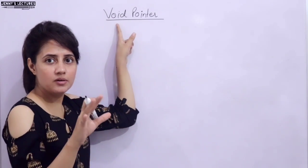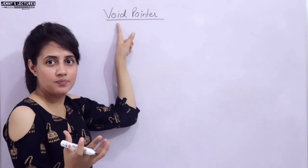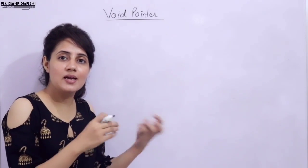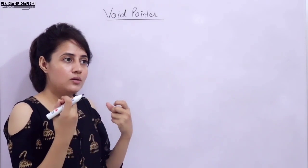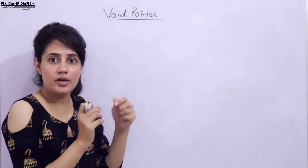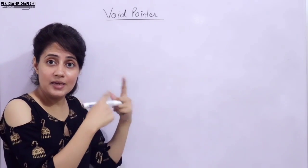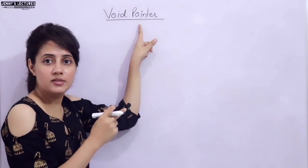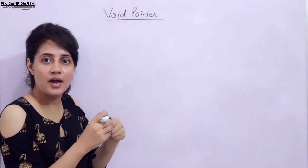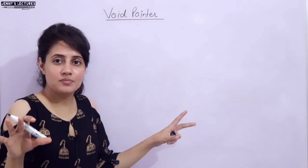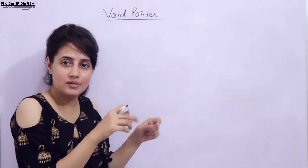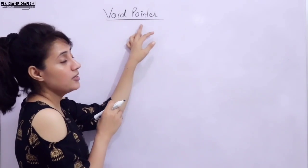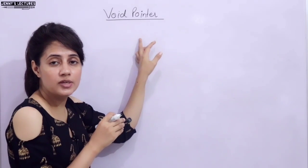Now let's discuss what is void pointer. I hope you know the meaning of void in general — in English it means empty. It's like if there is a glass and that is empty, that is void. You can fill that glass with water, some other drink, or milk — anything. Apply the same concept here. You can see in any book or on the internet that a void pointer is one that has no associated data type.